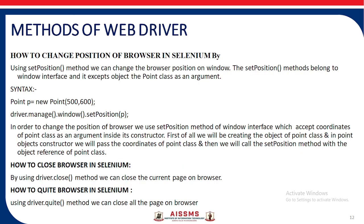To change the position of the browser in Selenium, we use the setPosition method. The syntax is: Point p = new Point(...); driver.manage().window().setPosition(p). To close the browser, we use driver.close(), which closes the current page on the browser. To quit the browser, we use driver.quit(), which closes all pages on the browser.